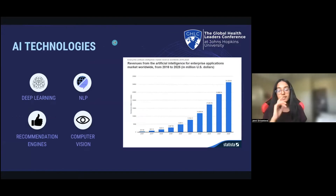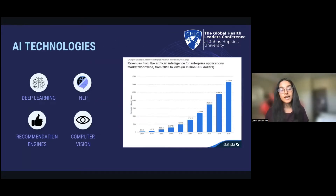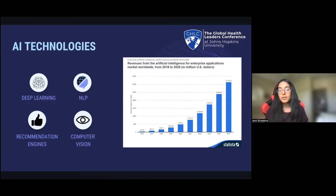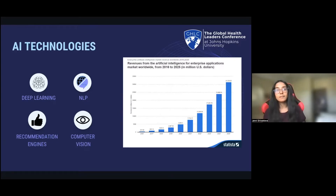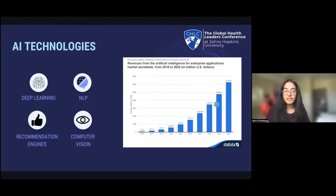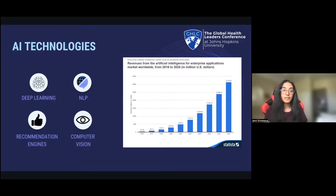Before I get into the specifics, I wanted to give a little introduction to the different types of AI we see in industries today. There are four different types: natural language processing or NLP, recommendation engines, deep learning, and computer vision. Computer vision is the most common type of AI method used for medical diagnoses. As you can see, AI is becoming more and more prevalent in every industry as time goes by, which is why it's important that more people become educated about how to use AI in medical diagnoses.